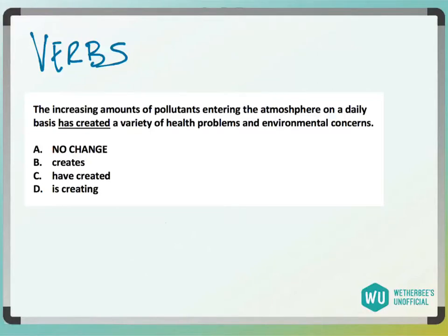So we have verbs as answer choices. When we have verb agreement, we need to know what the subject of the sentence is, because a verb agrees with the subject. Most people are going to want to make the verb agree with the noun that directly precedes it — the word that directly precedes it. But the trickier verb agreement questions on these tests are going to separate your subject from your verb.